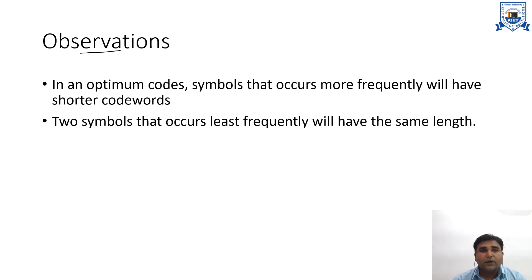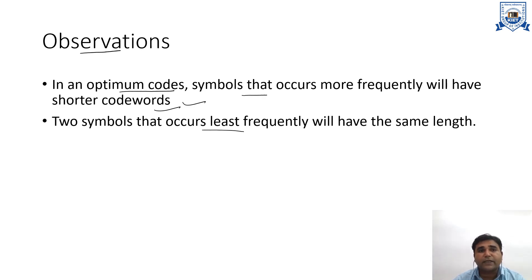Now come to the observation part. In an optimum code, the symbols that occur more frequently will have shorter codewords, and the two symbols that occur least frequently will have the same length. Therefore, a code that assigns longer codewords to symbols that occur more frequently cannot be optimum, because the average number of bits per symbol would be larger.